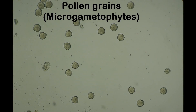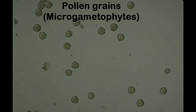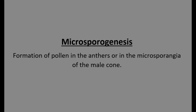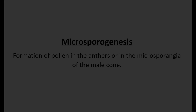Pollen grains are the microscopic male reproductive structures of higher seed plants and house the haploid male gametes. They are also known as micro gametophytes and vary in shape and size across species. Pollen is formed in the anthers or in the microsporangia of the male cone through a process known as microsporogenesis.